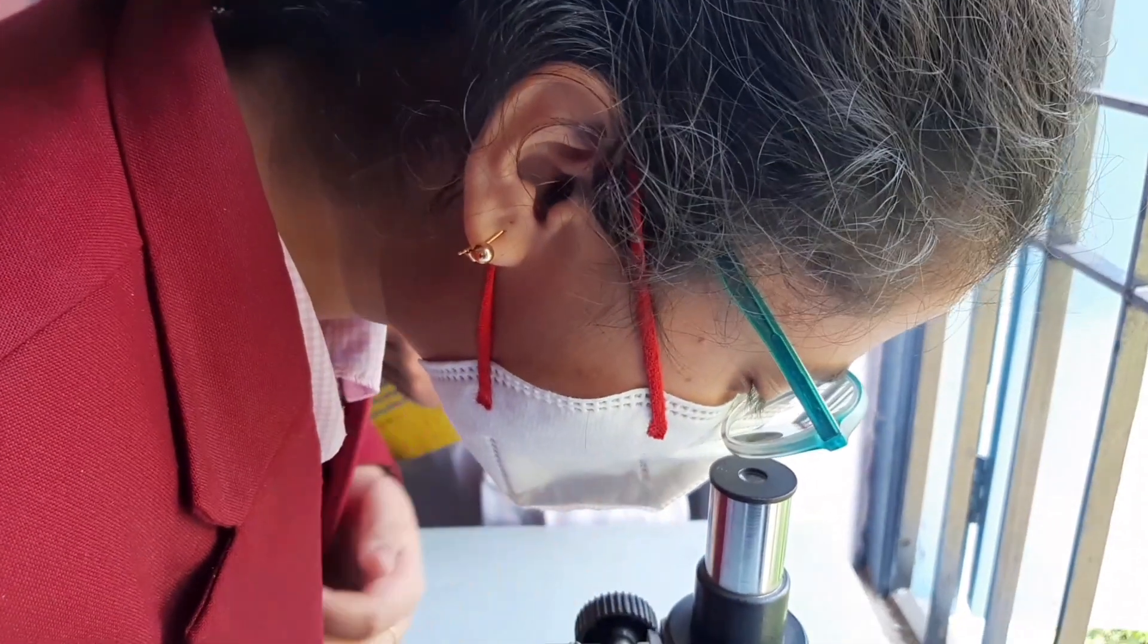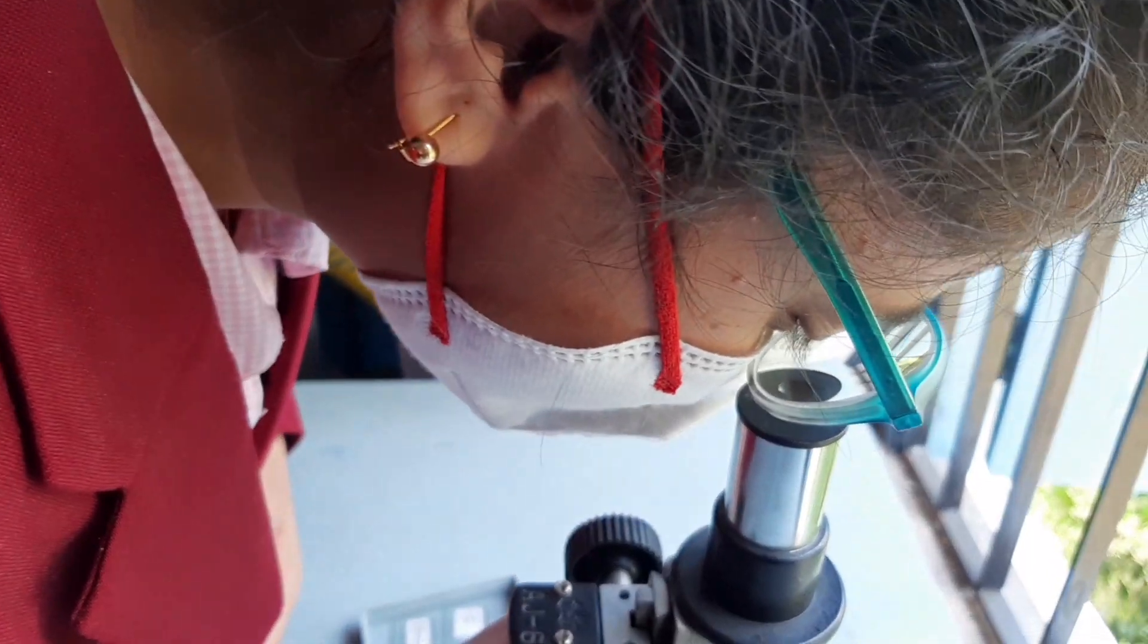The next type of tissue we are going to study is sclerenchyma. Now we have to fix the slide on the stage of the microscope and view it. We can see the sclerenchyma tissue. Let me adjust and show you.